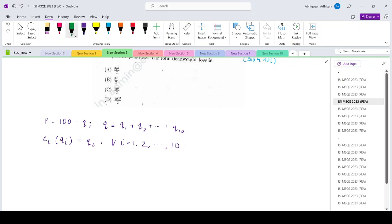Since there is an identical cost function structure, at optimal we know all firms will produce the equal amount of output equals to q over 10. Let's say we denote it by q star.